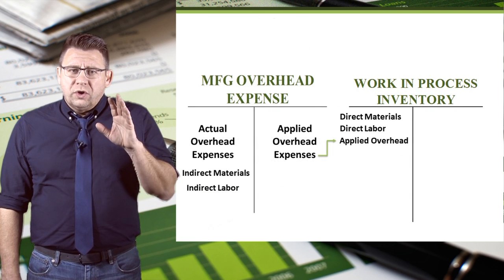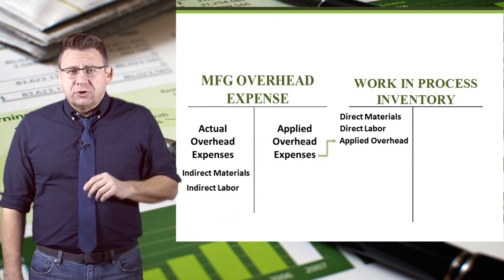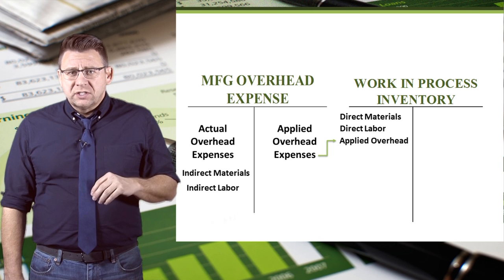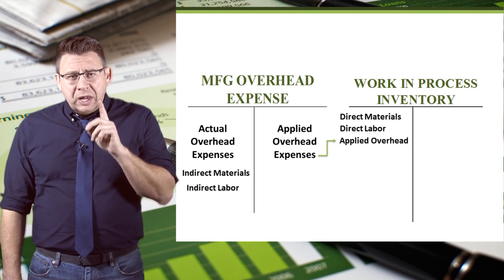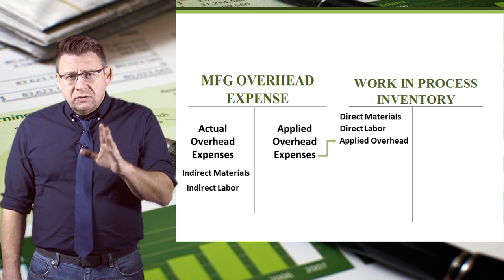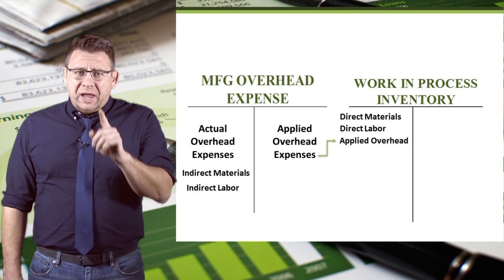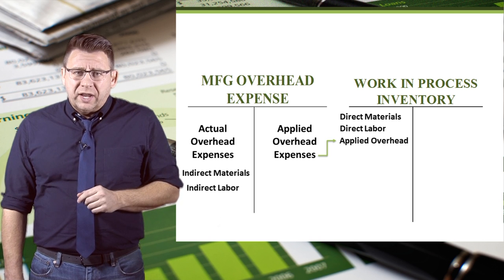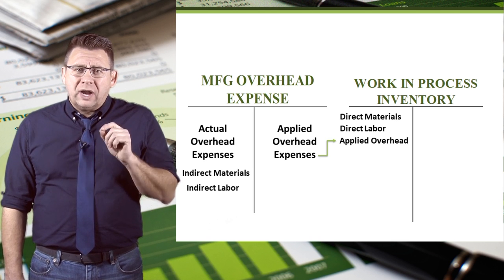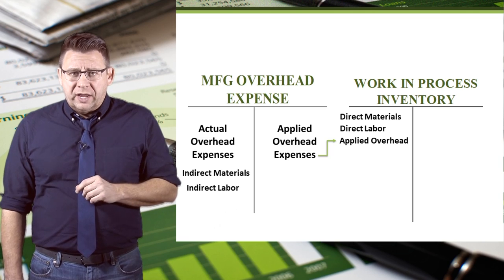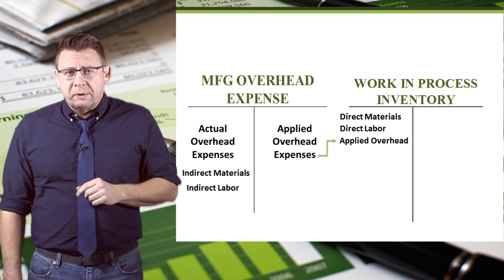The WIP account is debited for direct materials, direct labor, and applied or estimated manufacturing overhead. It is not debited for actual overhead. It is very important that you remember that.